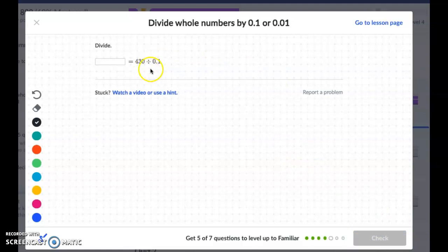430 divided by one-tenth. So 430, and there's my decimal, and then one-tenth means I'm going to shift it one place over and put my zero in. So 4,300.